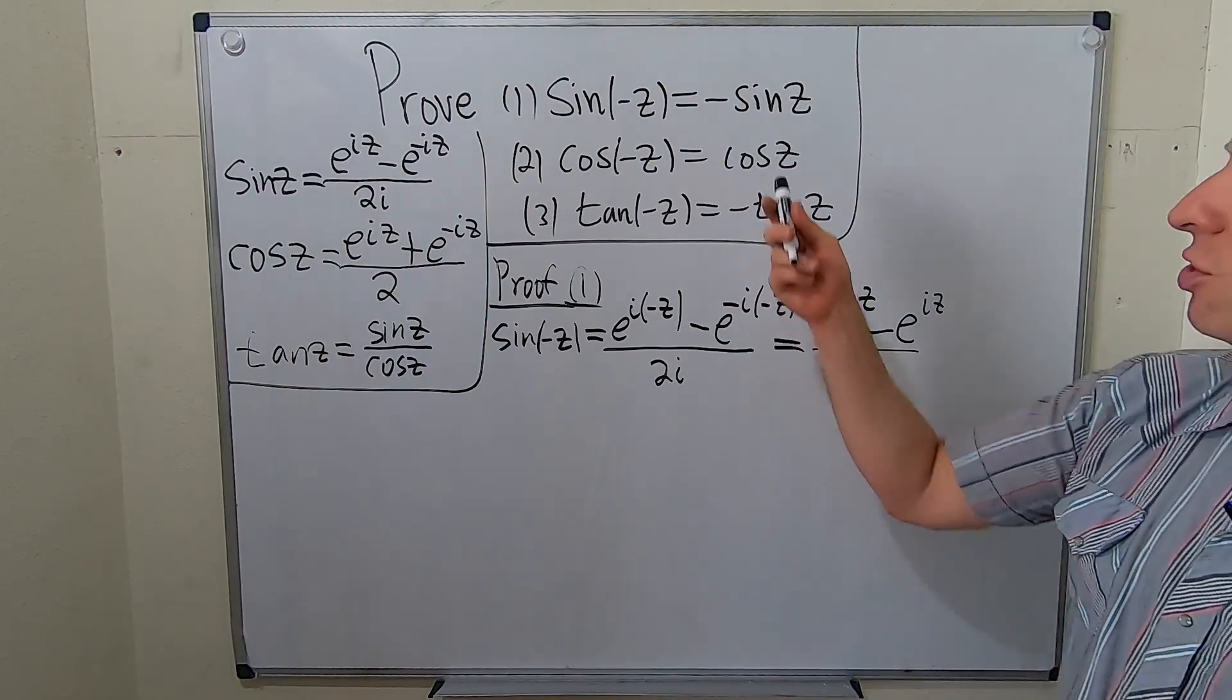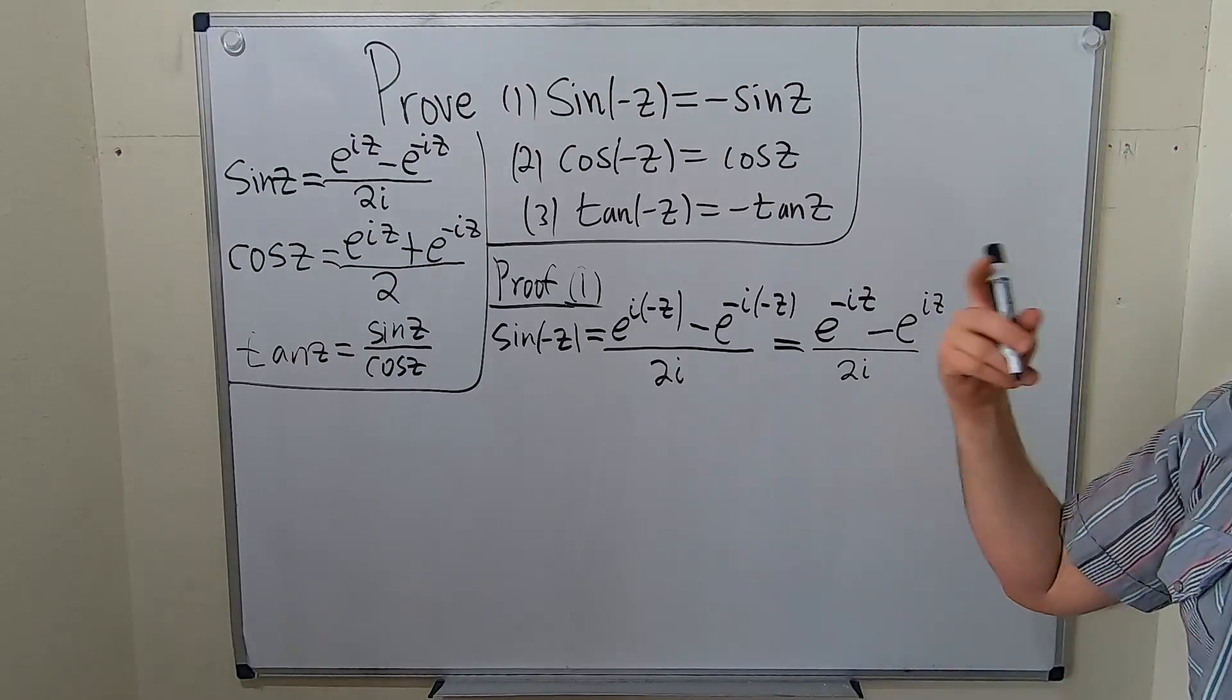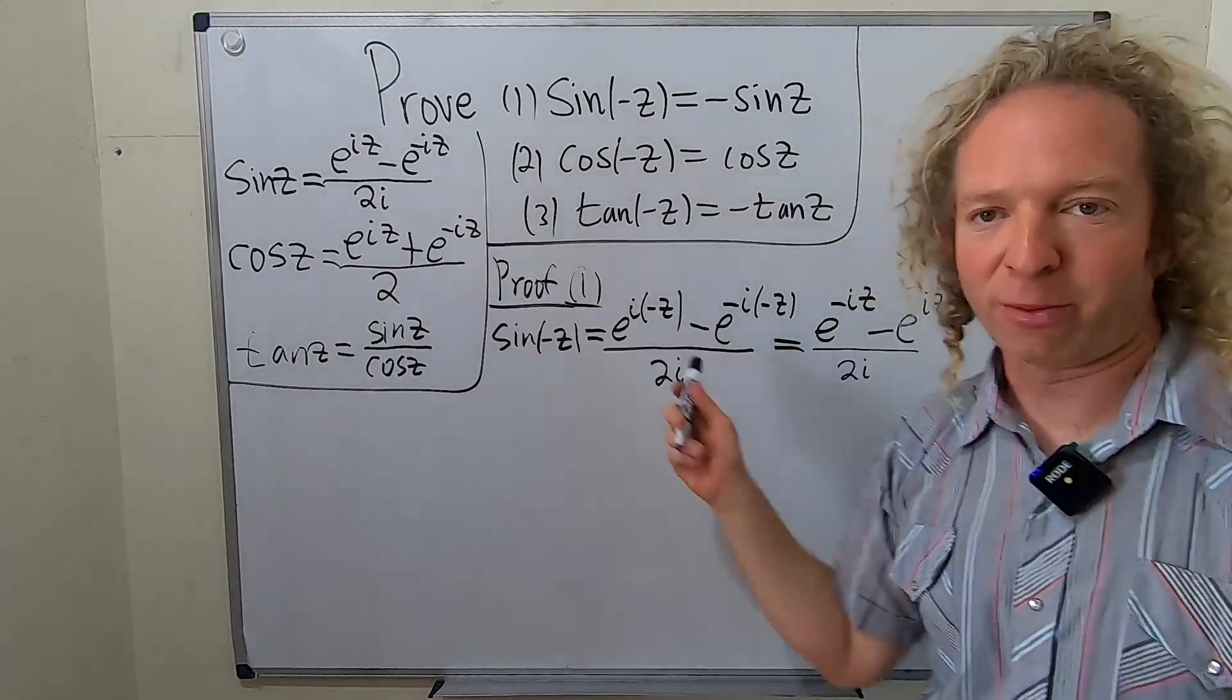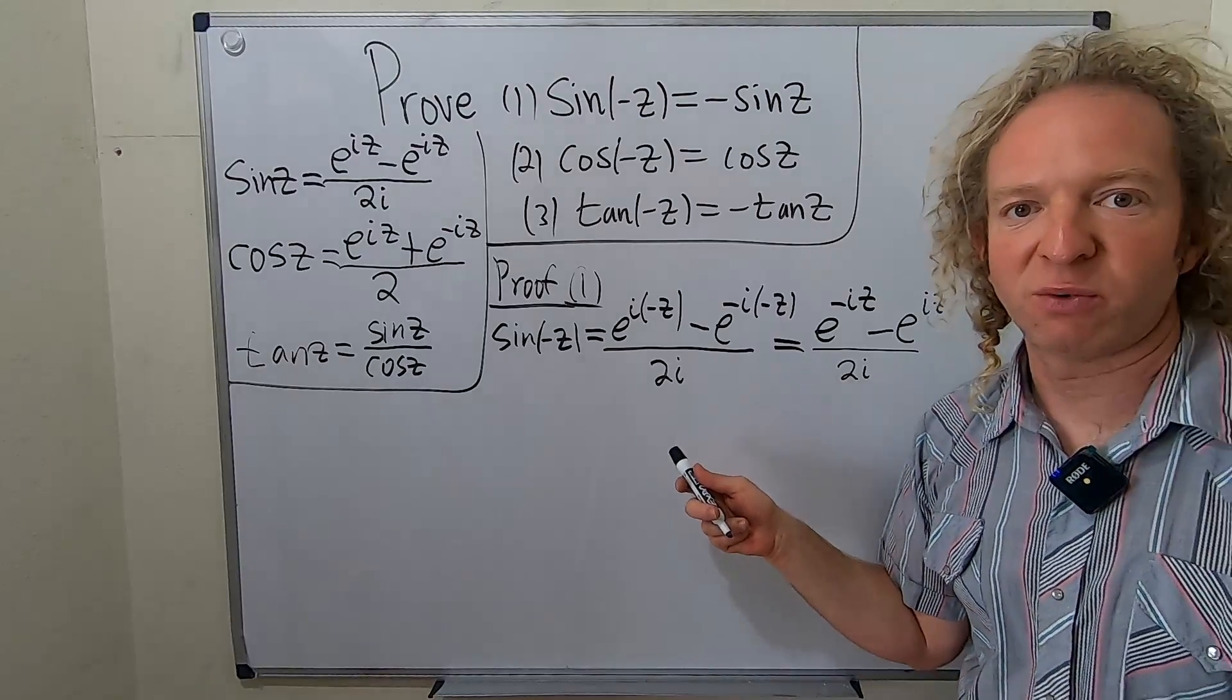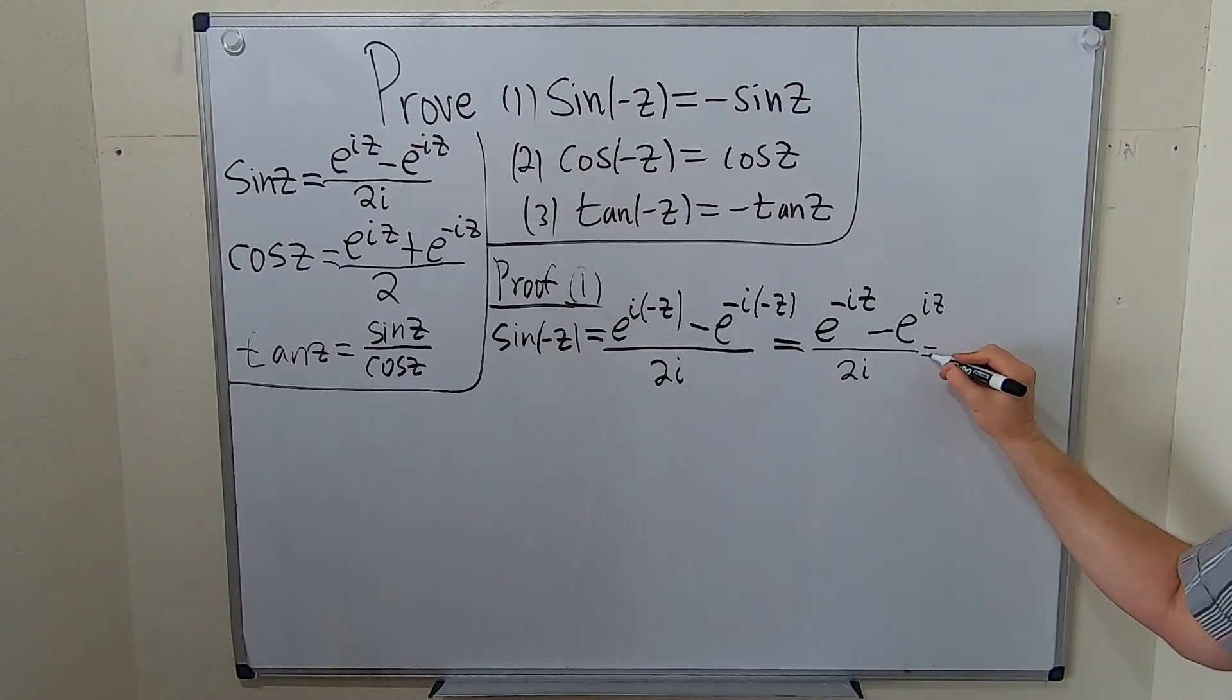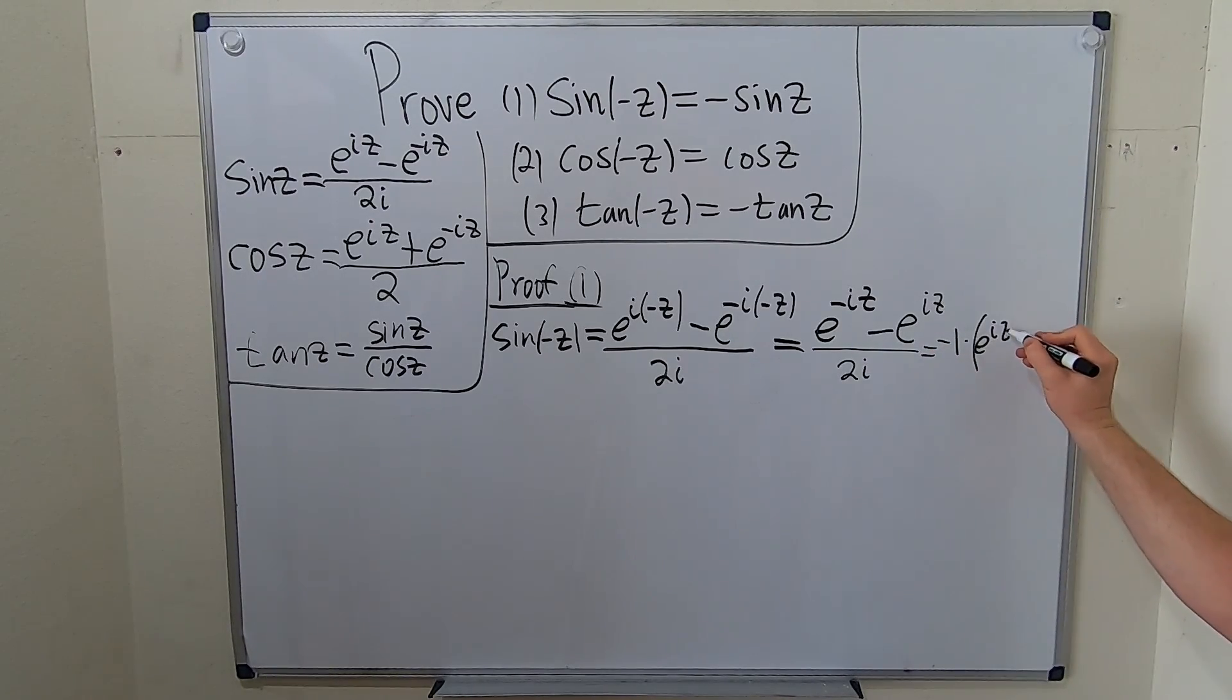We're trying to show it's equal to negative sine z. So this is almost there. The natural thing to do is to try to pull out a negative one and see if it works. So I'm going to pull out a negative one here. When I do that, this one's going to come up in the front. It'll be positive. And then I'm going to put a minus here to make that one a plus when we distribute through.